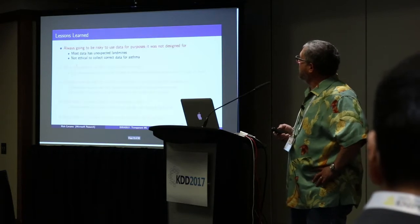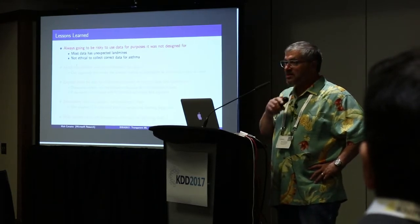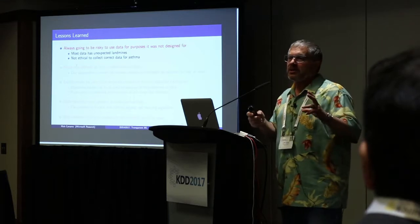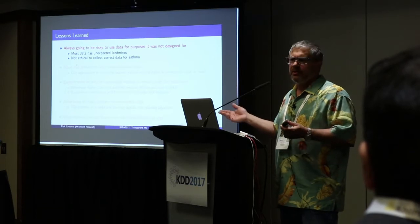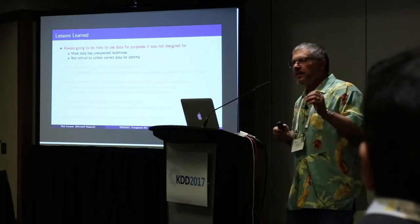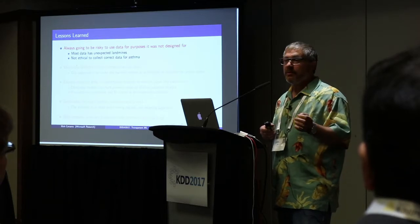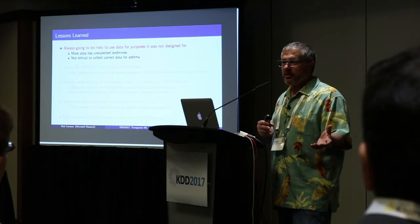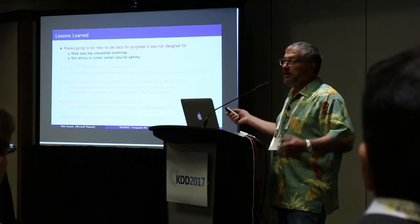It's always going to be risky to use data for some purpose other than which it was collected. Data always has these landmines. The perfect data for solving the asthma problem would require sending half of asthmatics home and admitting half to the hospital — which is unethical. You will never have the right data that has all the information you need about what happens to asthmatics if you do or don't admit them. That shouldn't stop us from doing machine learning, but it means we have to be able to understand what the model has learned in order to find these problems and fix them before deployment.